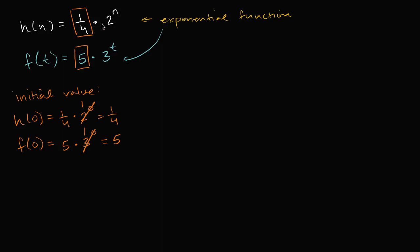So the initial value is, once again, that. So if you have exponential functions of this form, it makes sense. Your initial value, well, if you put zero in for the exponent, then the number raised to exponent is just going to be one. And you're just going to be left with that thing that you're multiplying by.